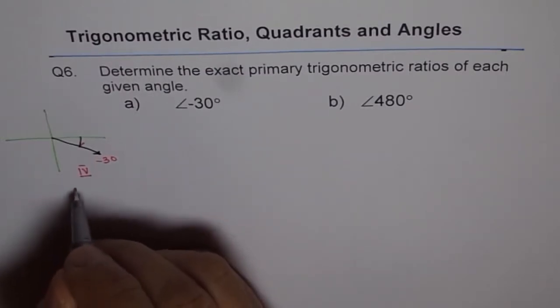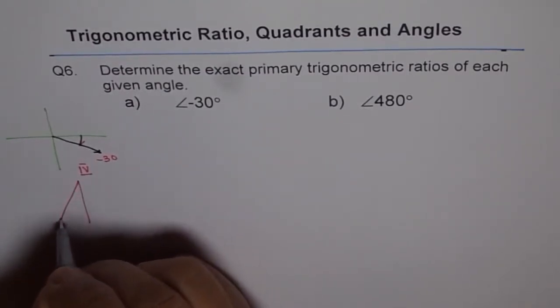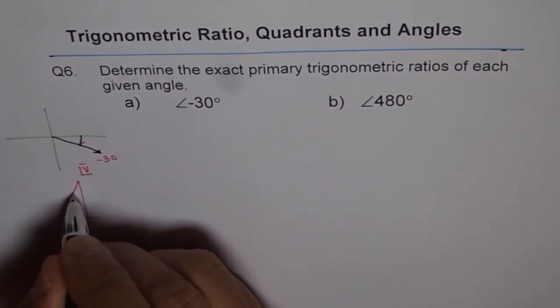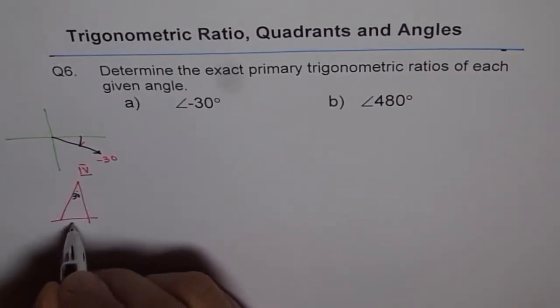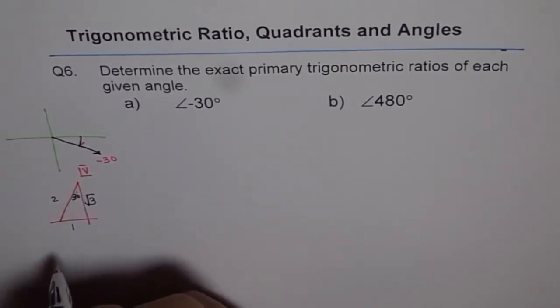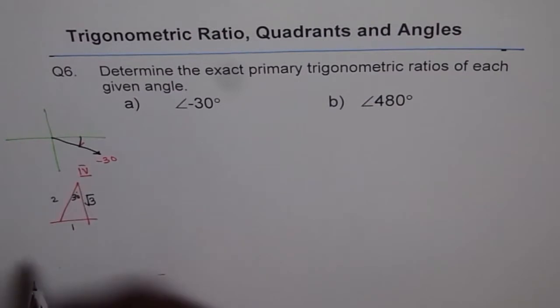The related acute angle is 30 degrees. Let's make our special triangle with 30 degrees - this one with sides 1, 2, and square root of 3. Since we are in quadrant 4, cos is going to be positive, sine and tan will be negative.